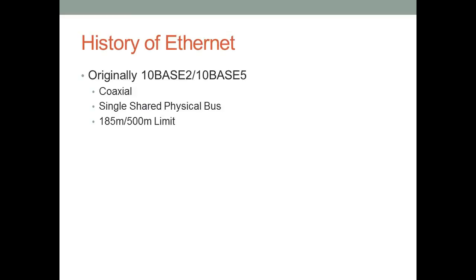Ethernet originally started as 10Base2 and 10Base5, called thinnet and thicknet respectively. Originally Ethernet used a single coaxial cable that ran from computer to computer, sharing a single physical bus. 10Base2 had a maximum cable length of 185 meters, and 10Base5 (thicknet) had a limit of 500 meters. Beyond that, you needed a repeater.